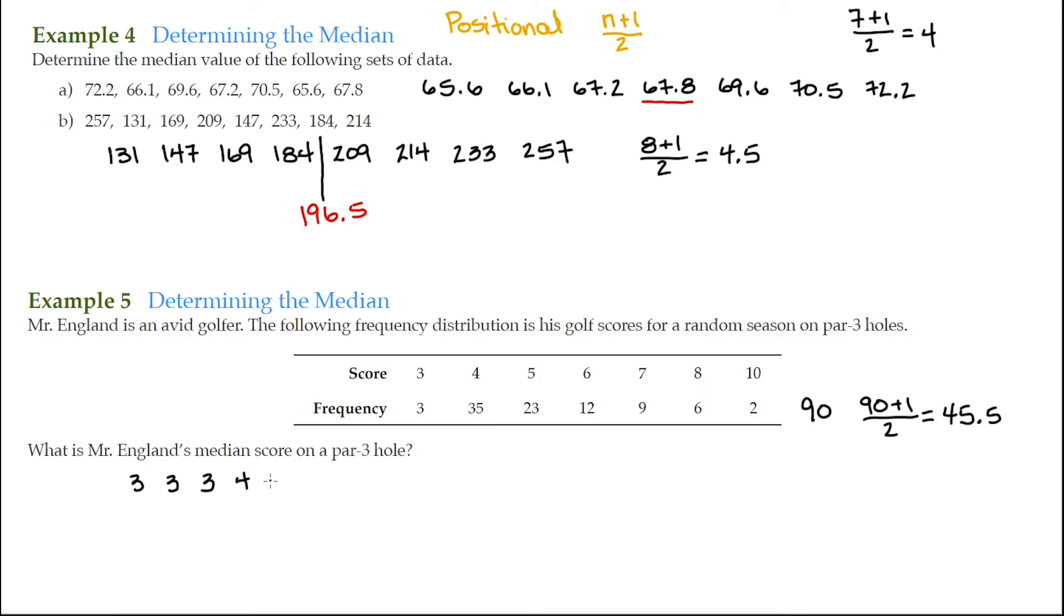Then he scored a 5, 23 times. Then he would have a 5 and a 5 and a 5 and of course that would continue for 23 times.